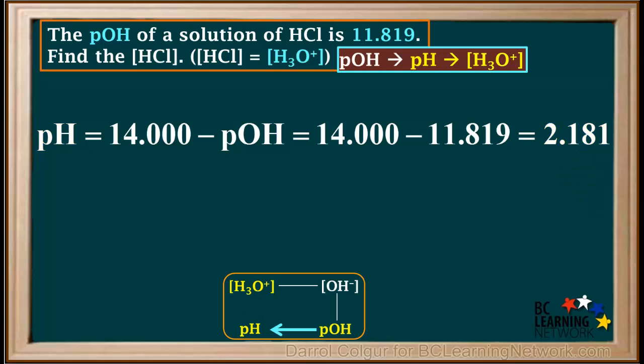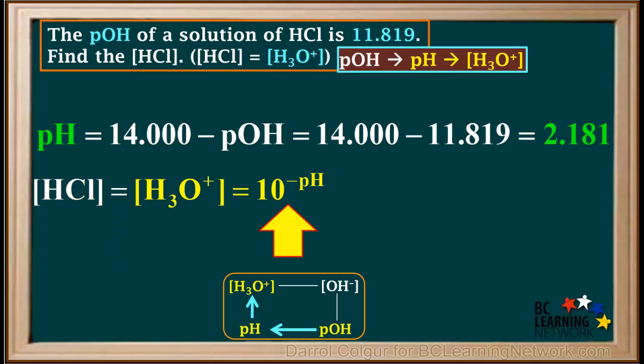The second step is to convert pH to hydronium ion concentration. Because HCl is a strong acid, the concentration of HCl is the same as the hydronium ion concentration. The formula we use is [H3O+] = 10^(-pH), which is 10^(-2.181).